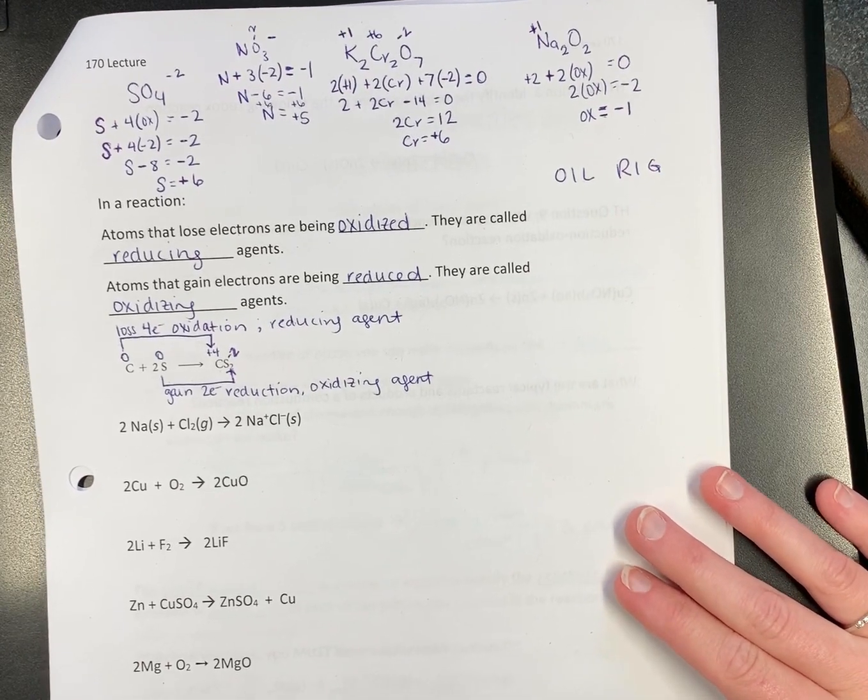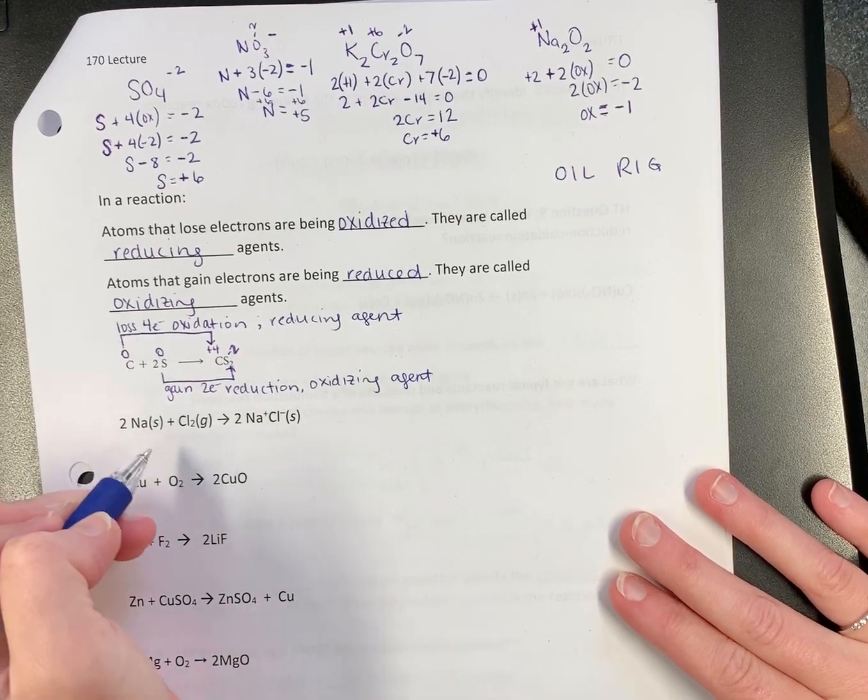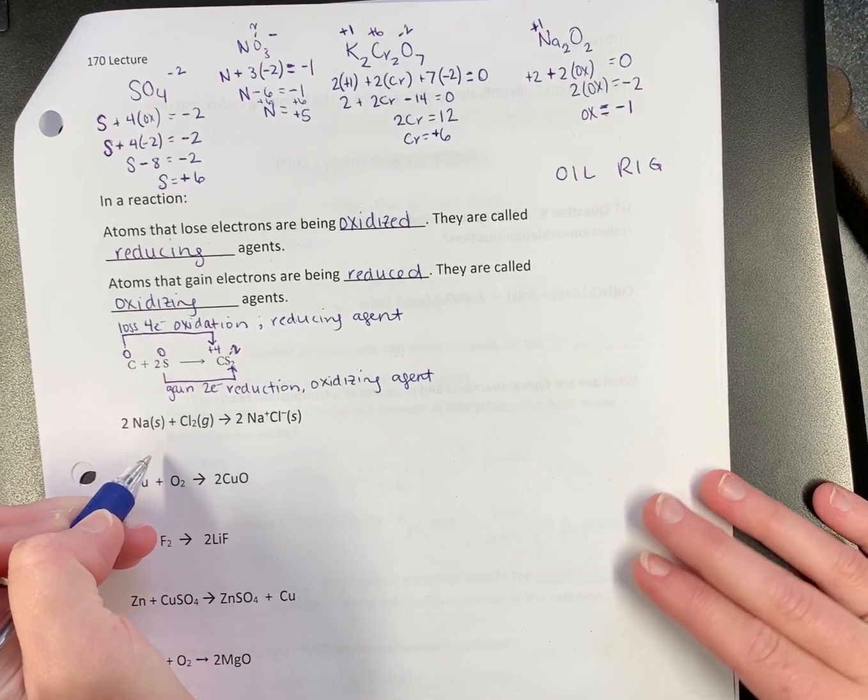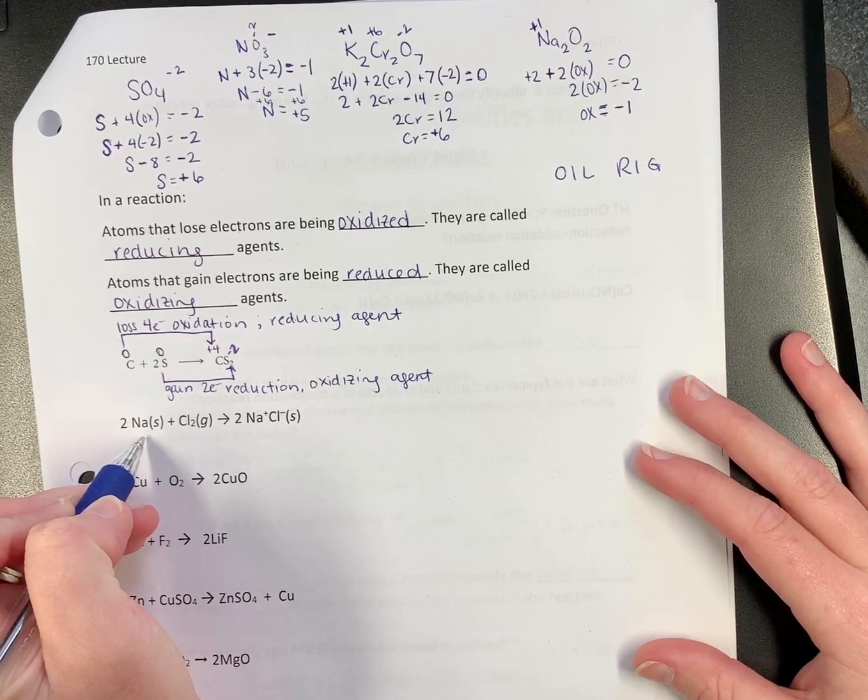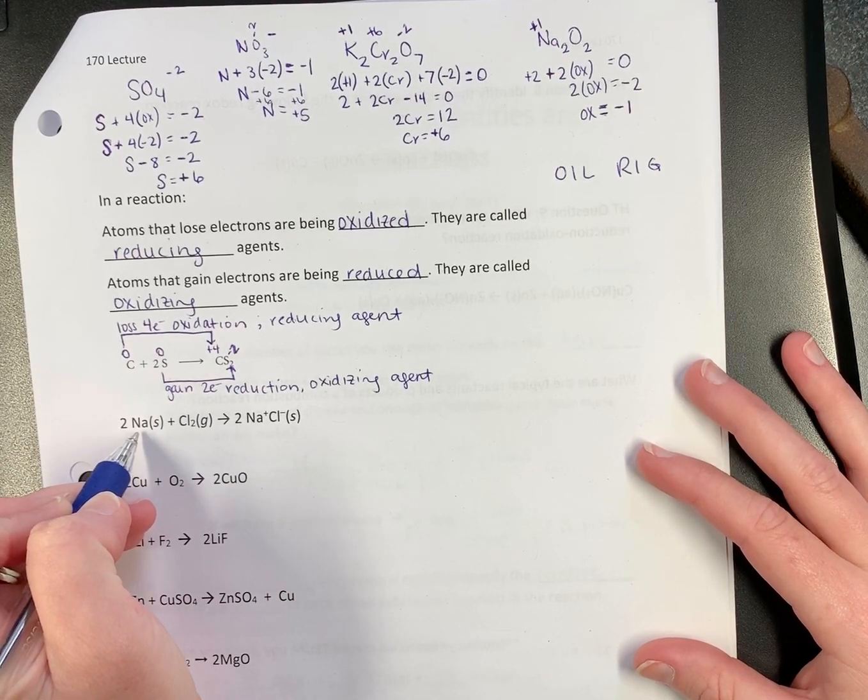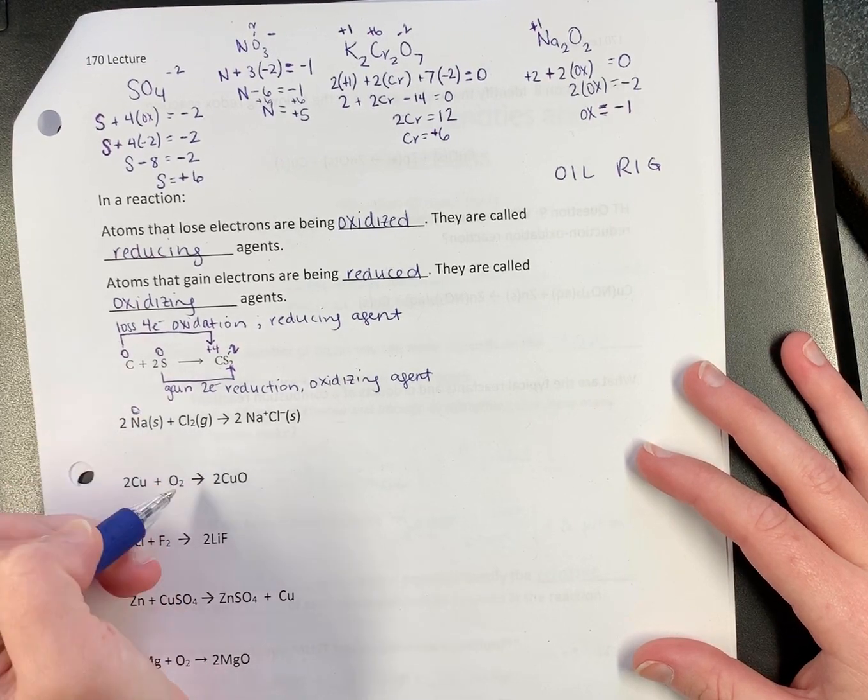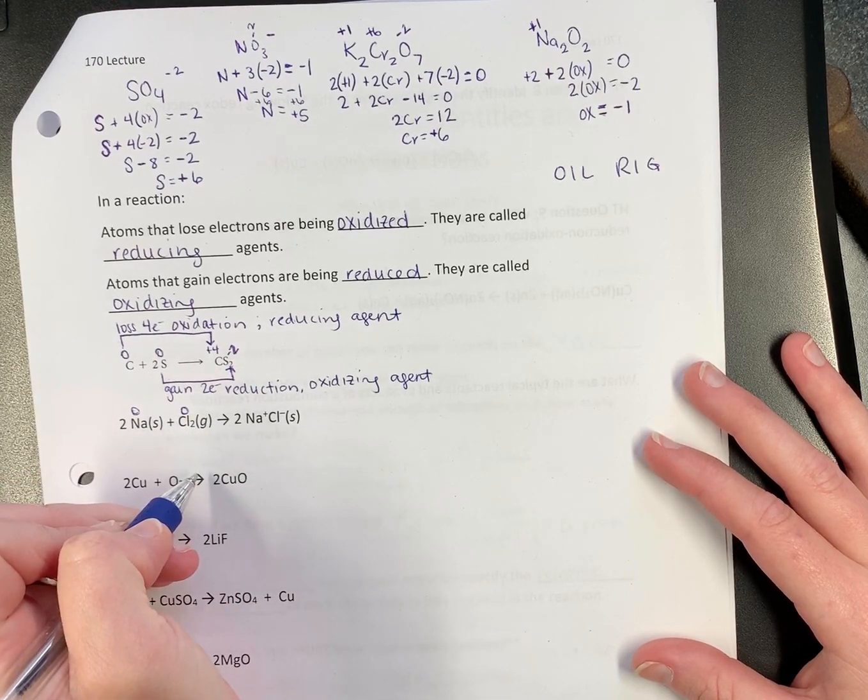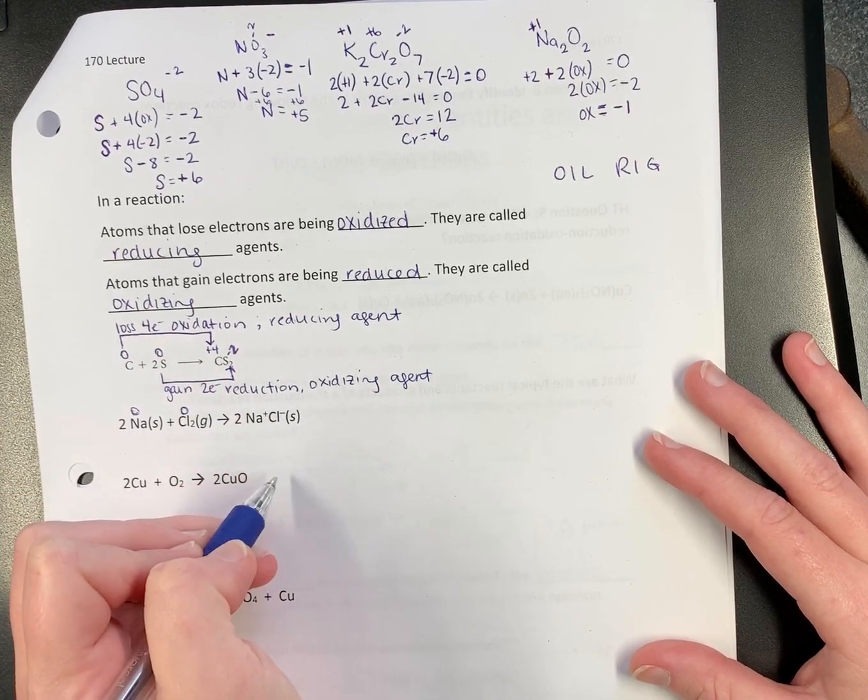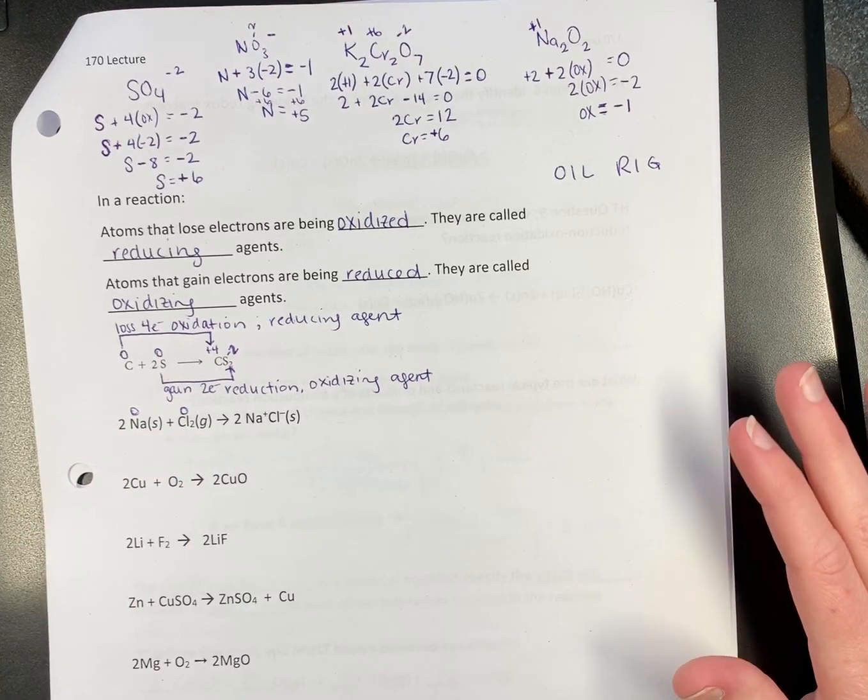Okay, let's do this next one. We have sodium and chlorine. Let's assign some numbers. Sodium here is zero. It's a free element. Chlorine is also a free element. It is zero. Look, it gave us sodium and chloride. So that's plus one and minus one. That makes it easier.